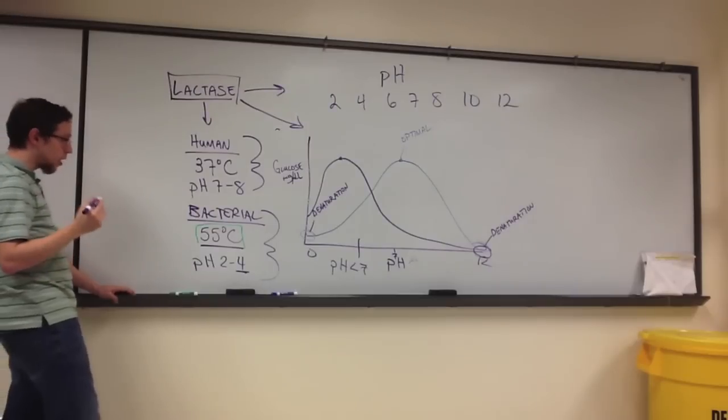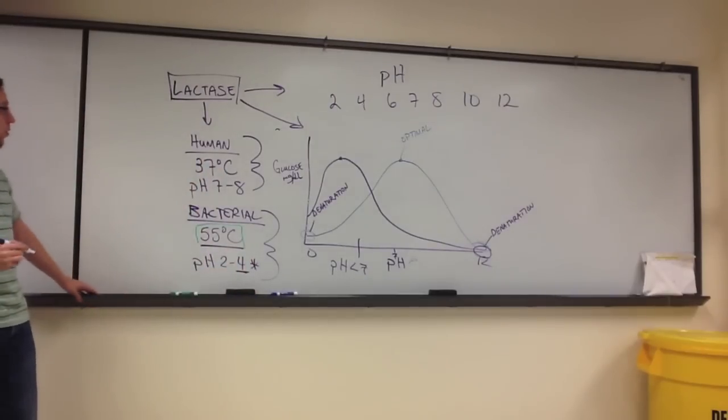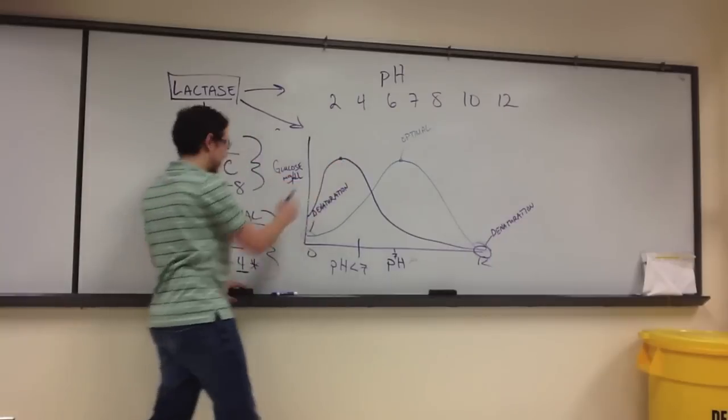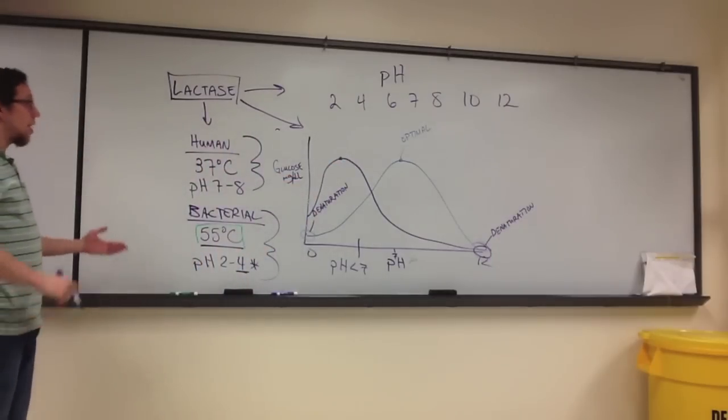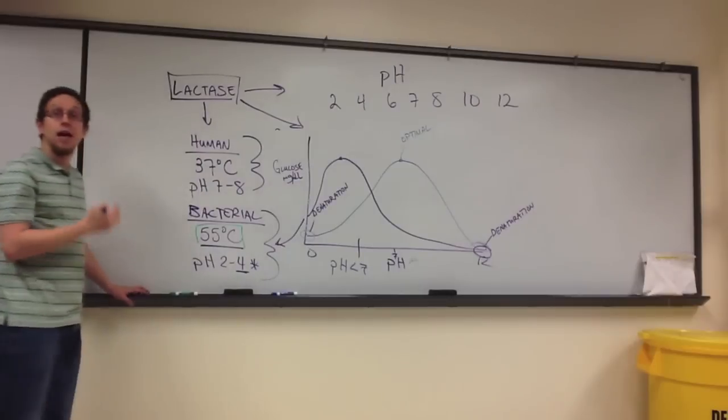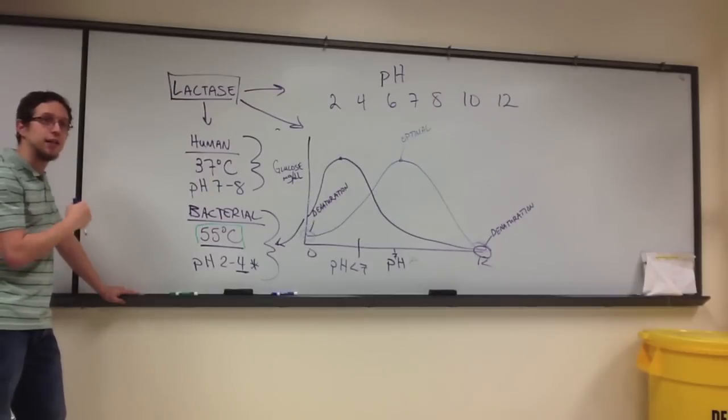And what I believe most of you found was that the optimal pH appeared to be around the four. So that would lend to the argument that the lactase was derived from a particular type of bacteria capable of surviving in an acidic environment.